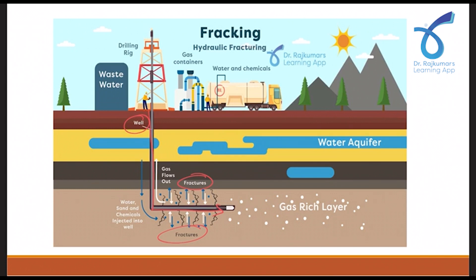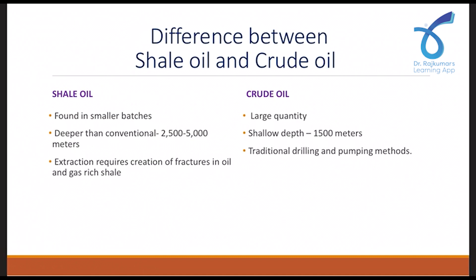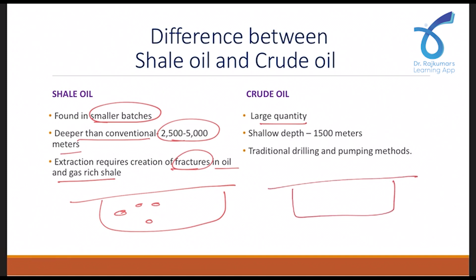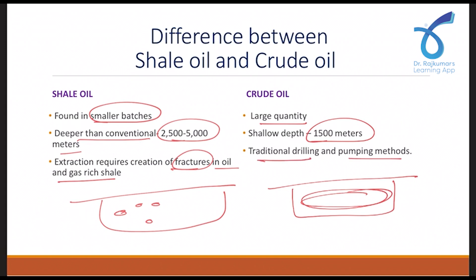The problem is that this technology is very challenging and expensive. So what is the difference between shale oil and crude oil? Shale oil is found in smaller batches, deeper in the earth's surface — up to 2,500 to 5,000 meters — and extraction requires creation of fractures in the oil and gas-rich shale. Crude oil, on the other hand, is found in large quantities at a particular place, at a shallow depth of around 1,500 meters, and can be extracted using traditional drilling and pumping methods.